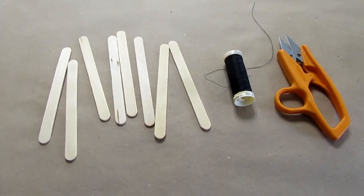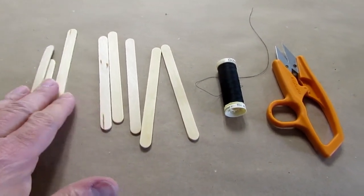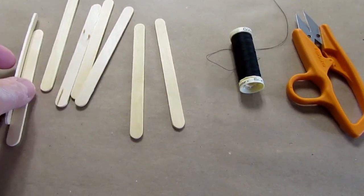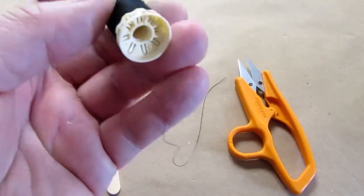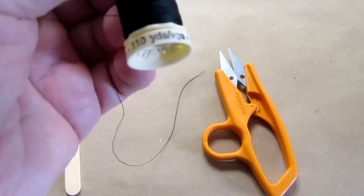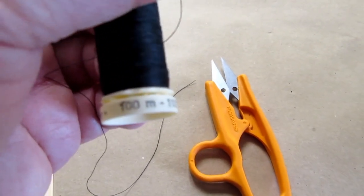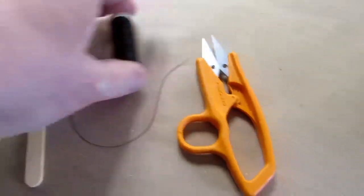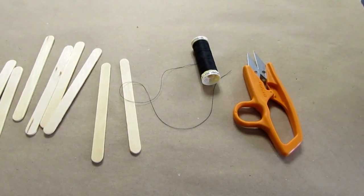The materials for my tensegrity structure include six, seven, eight popsicle sticks, and some black thread. I'm not sure what the material is. It's 100% polyester, normal black sewing thread, and scissors, and probably some epoxy and or super glue.